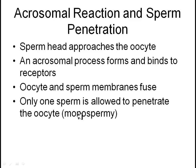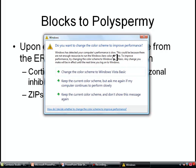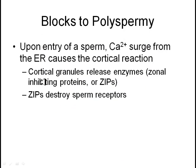Only one sperm gets in — this is called monospermic. The blocking of extras occurs because once the sperm enters, the egg cell releases calcium from the endoplasmic reticulum. This causes cortical granules to release enzymes called zonal inhibiting proteins, or ZIPs. These ZIPs destroy all the sperm receptors, not allowing another sperm to bind, and the membrane also changes and hardens. On occasion this does not work and more than one sperm enters, creating a chimera situation, but this is the normal scenario.